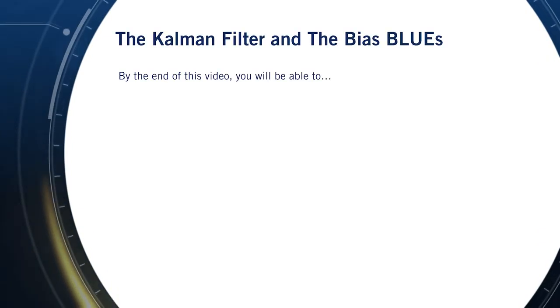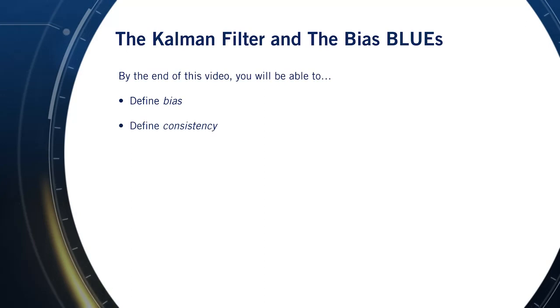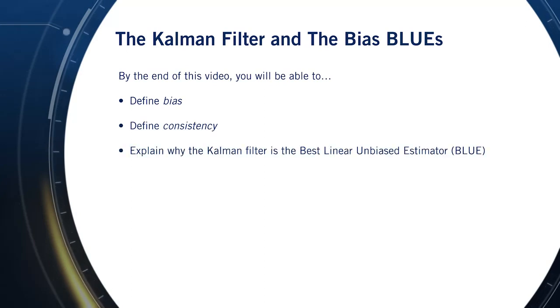Now we've introduced the Kalman filter, let's discuss what makes it such an appealing estimation method. By the end of this lesson you'll be able to define two important terms in state estimation: bias and consistency. You'll then use these definitions to show why the Kalman filter is the best linear unbiased estimator, or BLUE.